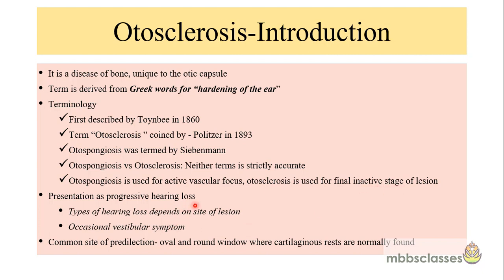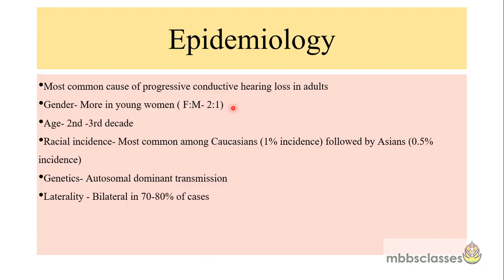Patients with otosclerosis usually present with hearing loss that is gradually progressive and bilateral. The most common sites of otosclerosis are the oval and round window, where cartilaginous rests are found. Epidemiologically, otosclerosis is the most common cause of progressive conductive hearing loss in adults. The age group affected is usually young people ranging from the second to the third decade.